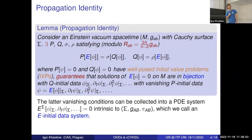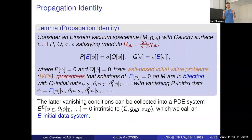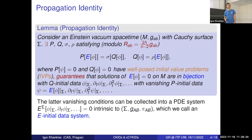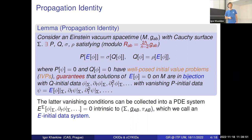The induced structure — the initial data for the Einstein system — is the three-dimensional metric and the extrinsic curvature. That is sufficient to determine the evolution. We allow a cosmological constant: it doesn't cause any harm.